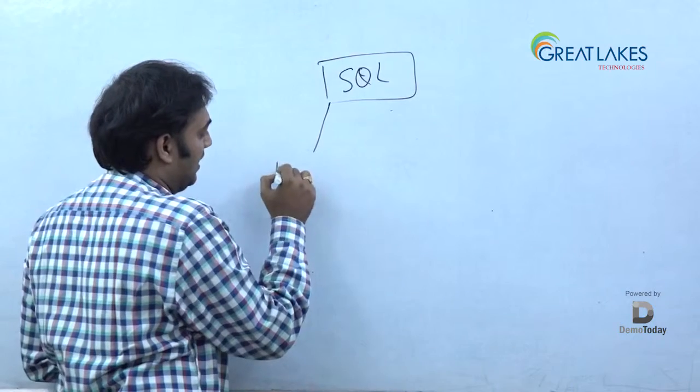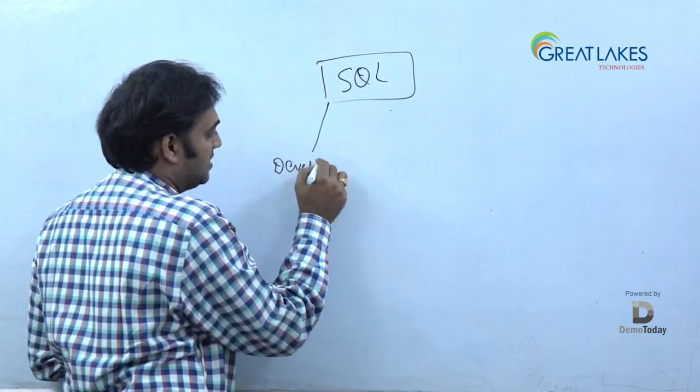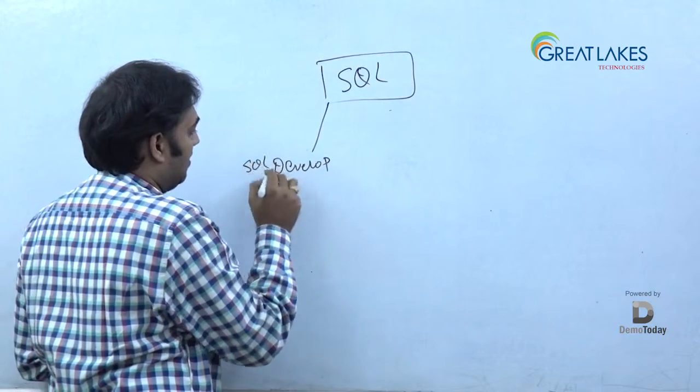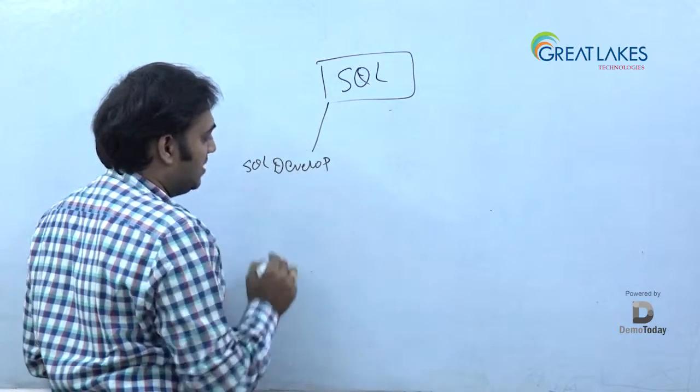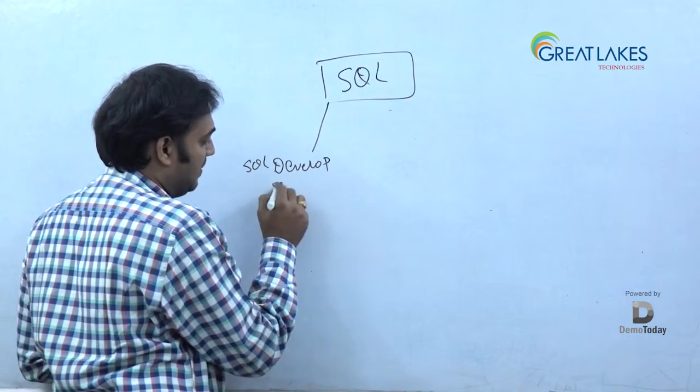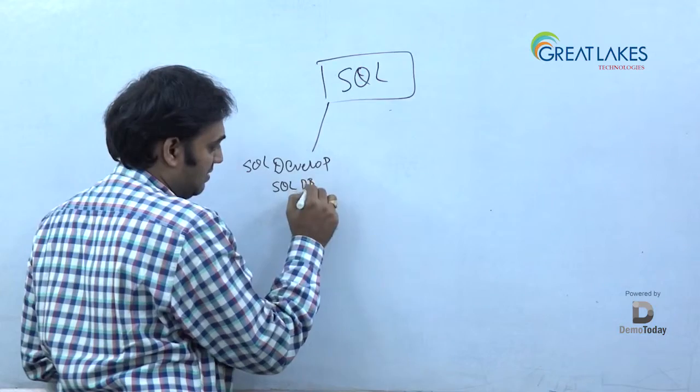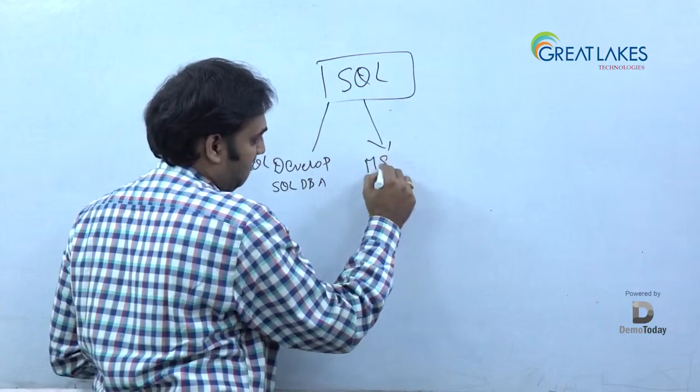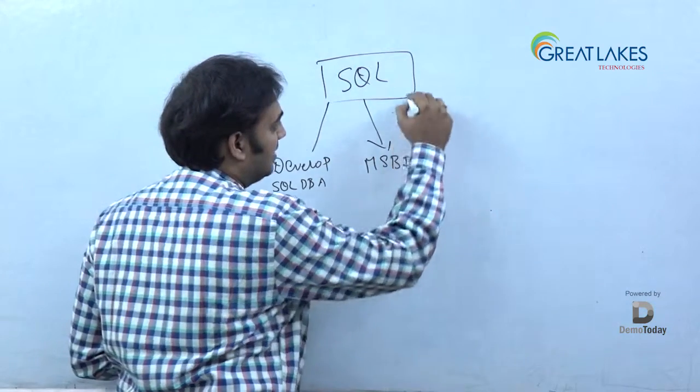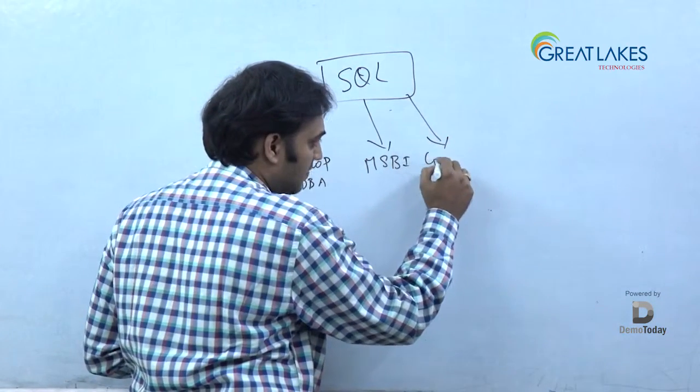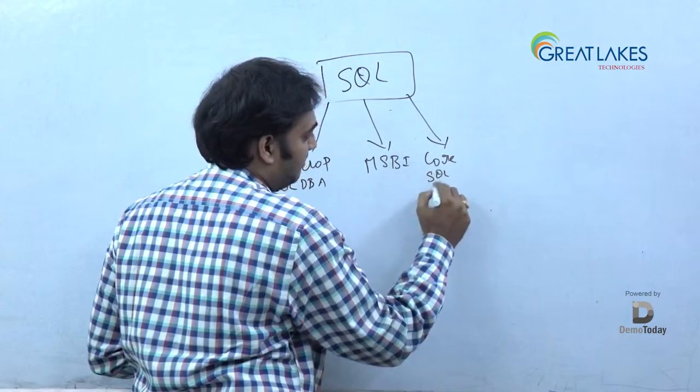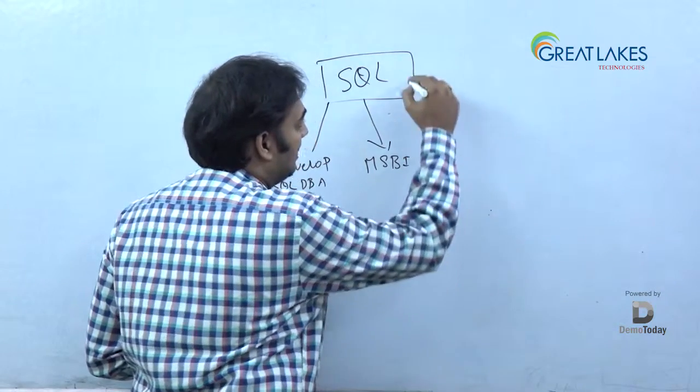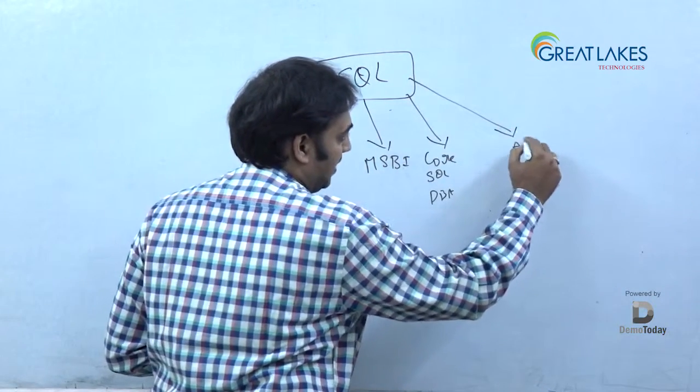First opportunity is something called Developer, that is called SQL Developer. Some companies will take it as SQL DBA for this event. Second role, there is something called MSBA. Third thing, there is something called Actual Core SQL DBA. And there is something else called Application DBA.